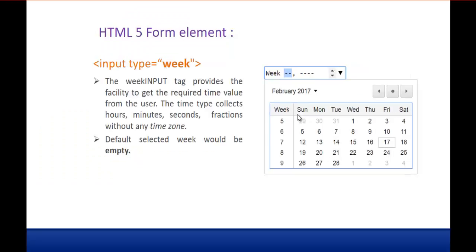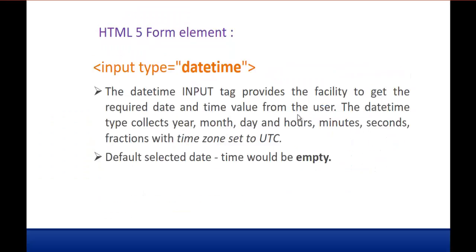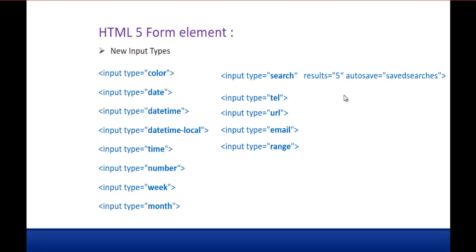Finally, what we learned in this session: we covered eight input types of the HTML5 form element — color, date, datetime, datetime-local, time, number, week, and month. These are the new input types present in HTML5 for the form element. In the next session we are going to learn about the remaining five: input type search, telephone, URL, email, and range.